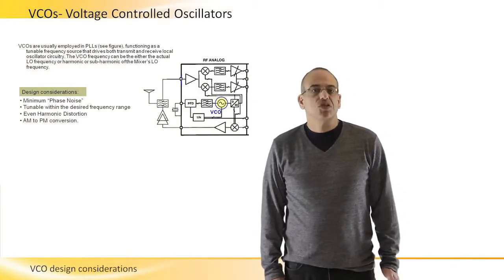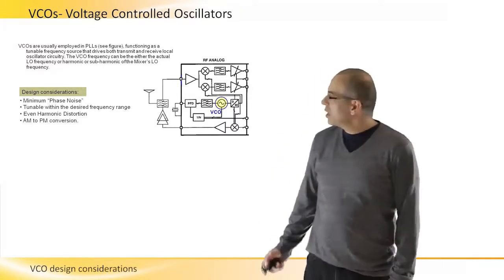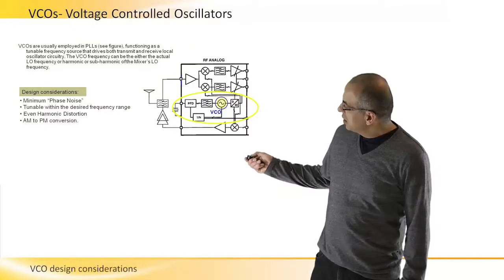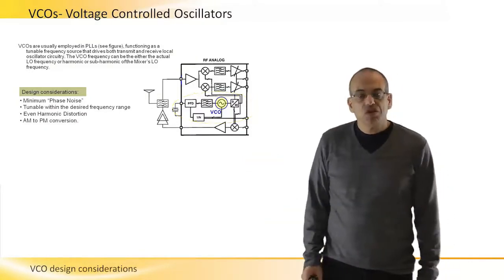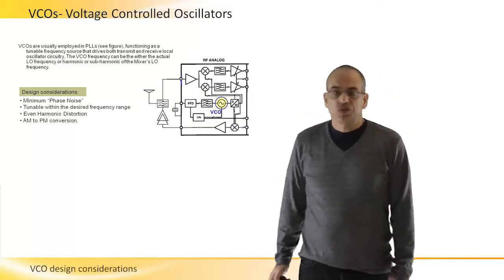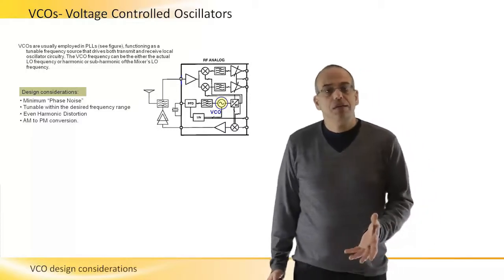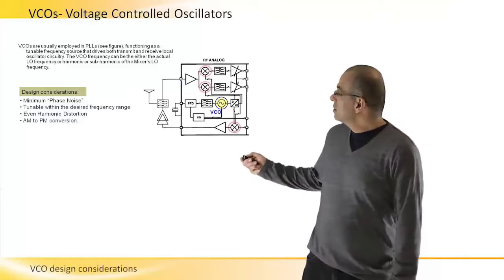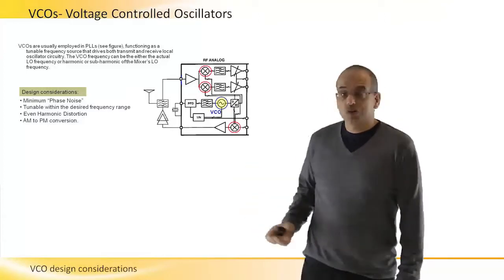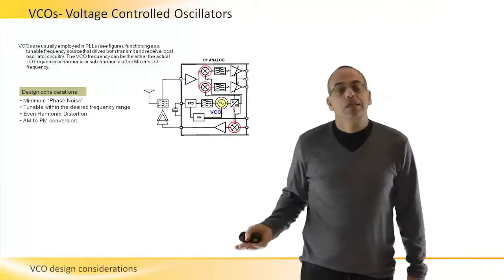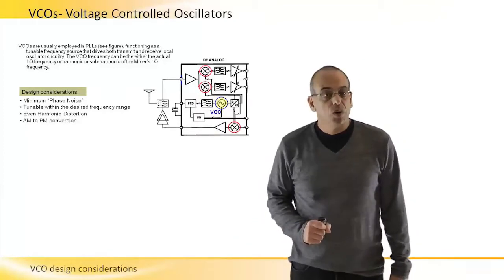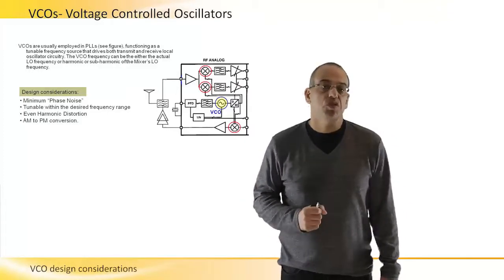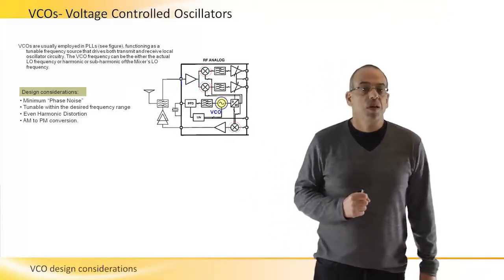VCOs or Voltage Controlled Oscillators are usually employed within PLLs. These are the circuits that provide the local oscillator signals. Either the VCO output or a harmonic or sub-harmonic of this VCO output would be the mixer's LO that was mentioned when we talked about mixers before.